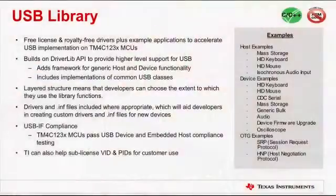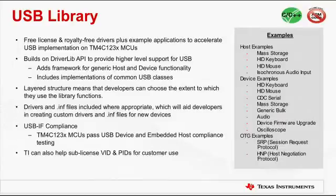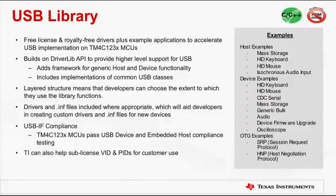The USB library consists of free, licensed, and royalty-free drivers with example applications to accelerate USB implementation on TM4C123X devices. The library functions are written entirely in C, easy to understand, and reasonably efficient in terms of memory and processor usage. The USB library can be built with more than one toolchain and is built over DriverLib APIs to provide higher-level support for USB, including implementations of common USB classes. The layered structure means developers can choose the extent to which they use library functions. A number of examples for each of the three modes — host, device, and OTG — are also provided. TI is a member of the USB Implementers Forum, showing strong commitment to USB support.